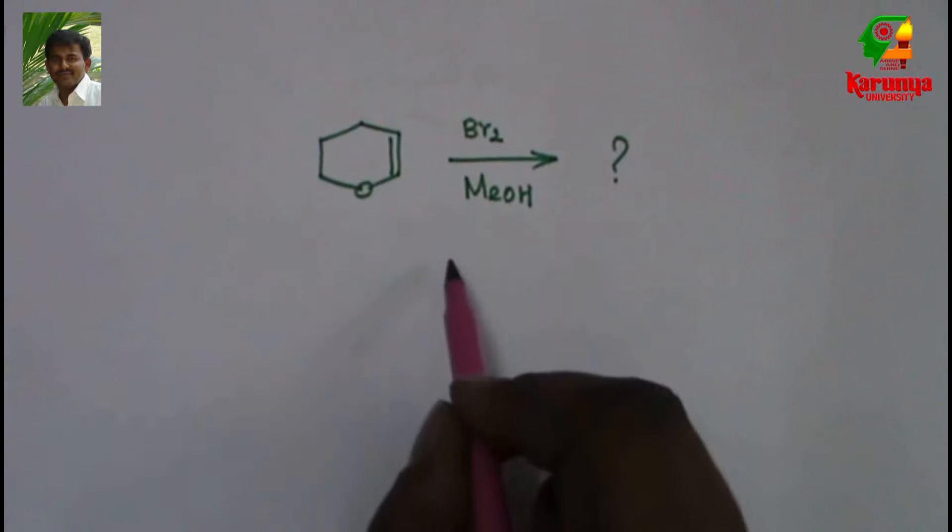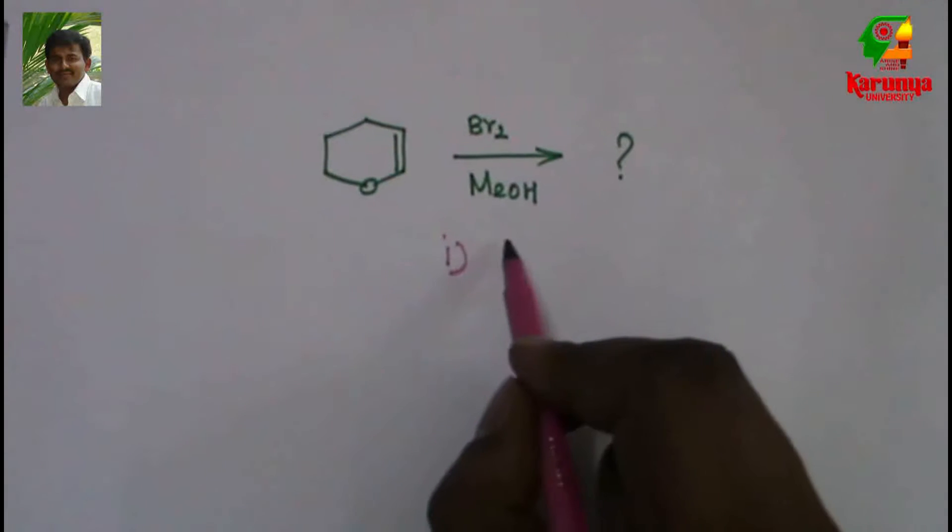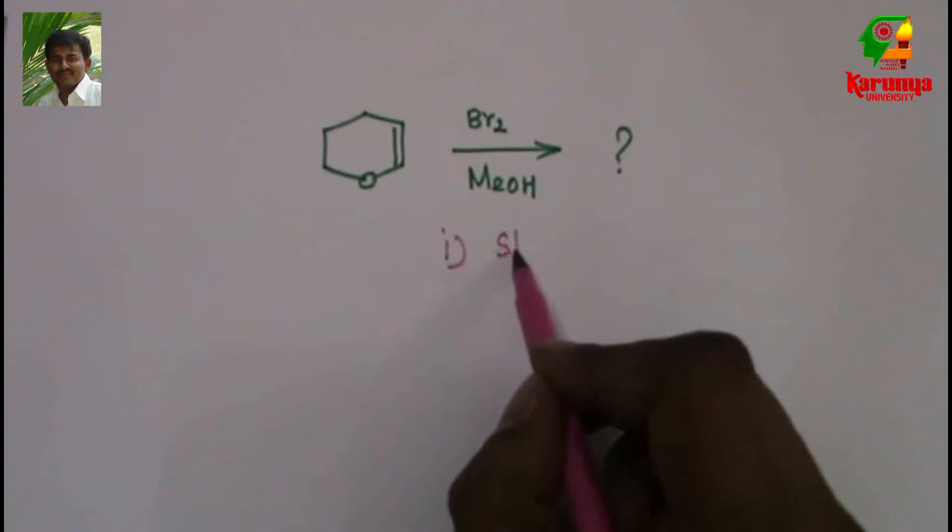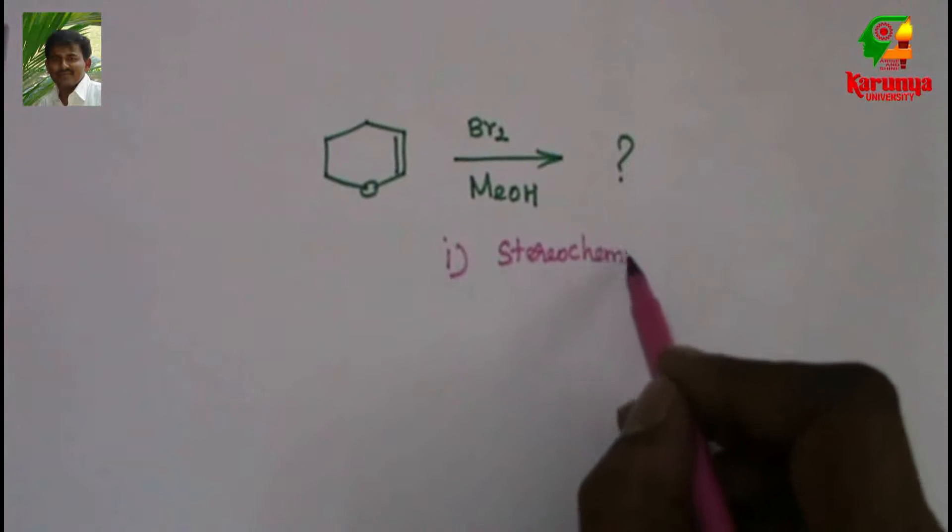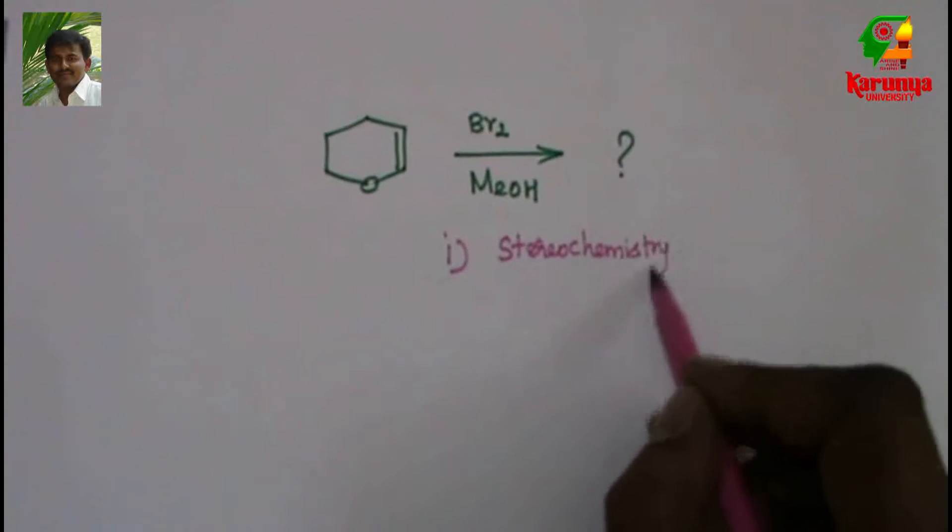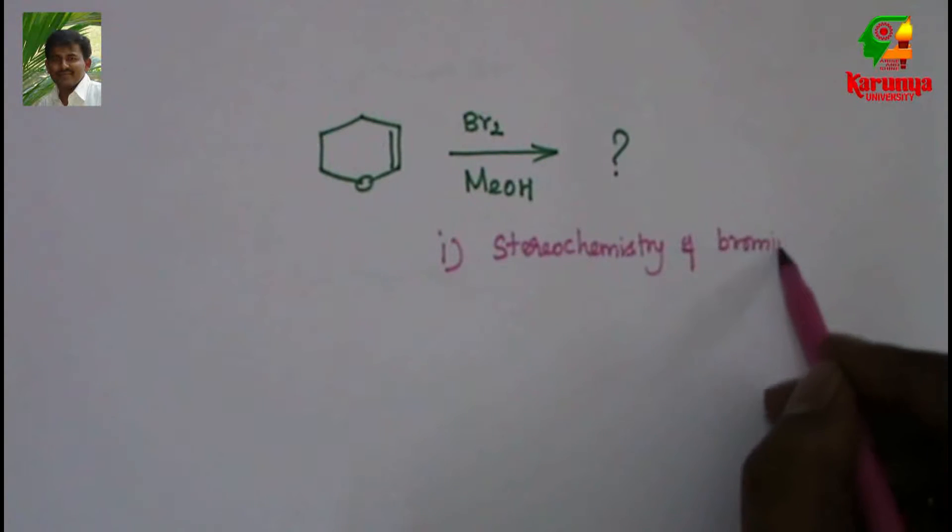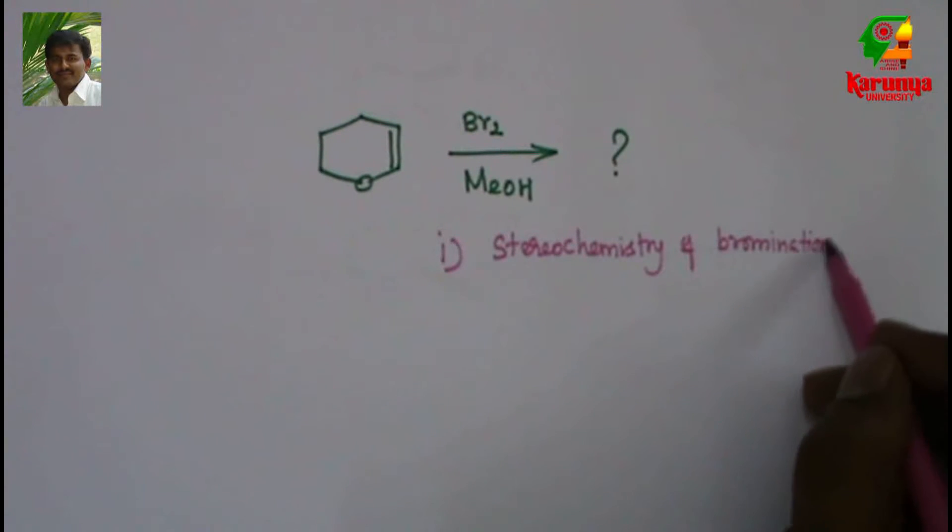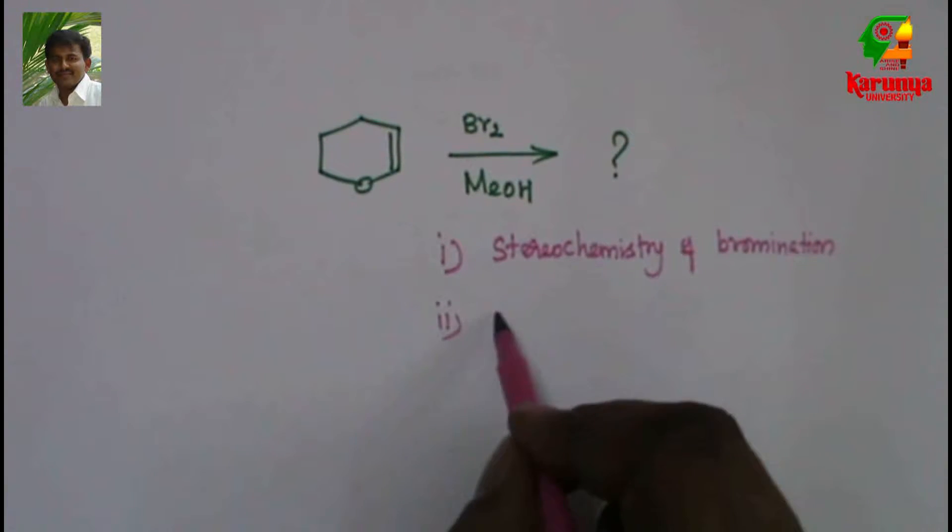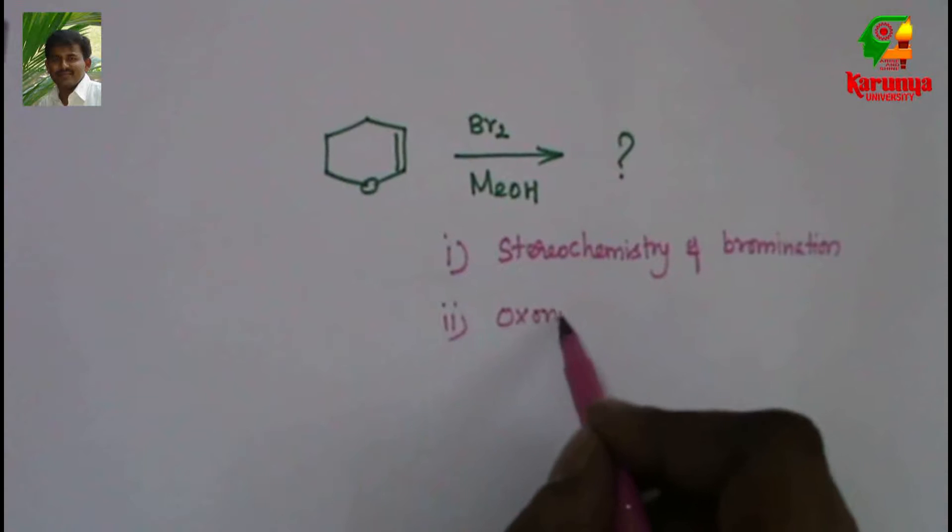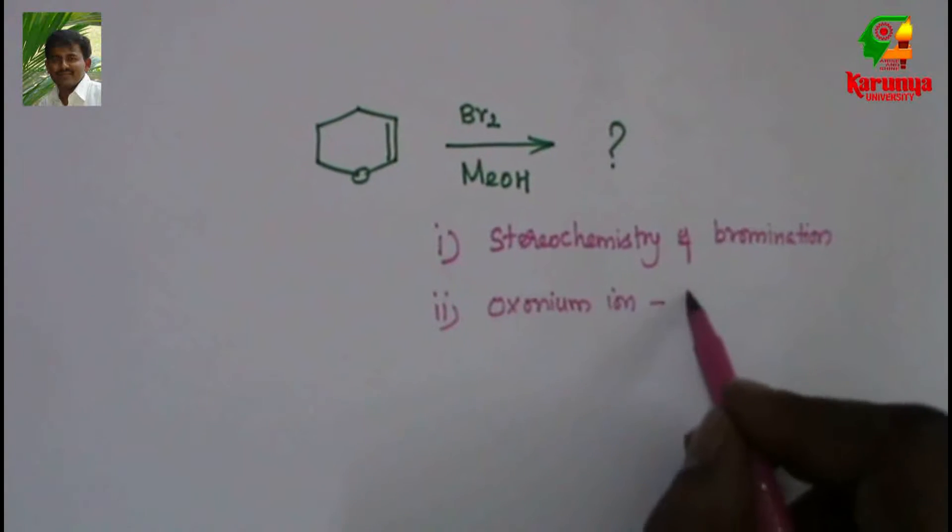In order to solve this you should know two concepts: that is stereochemistry of bromination, and second, oxonium ion formation in vinyl ether.